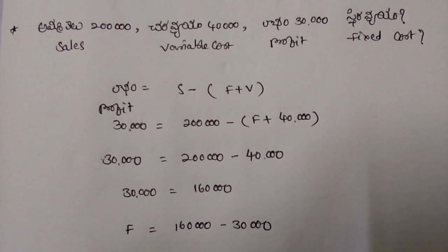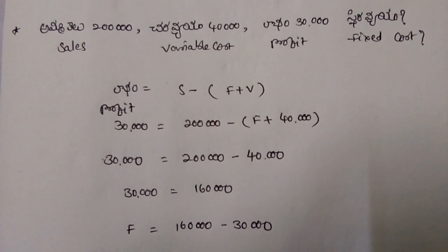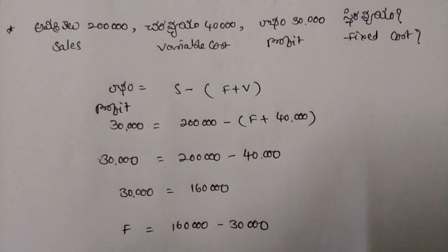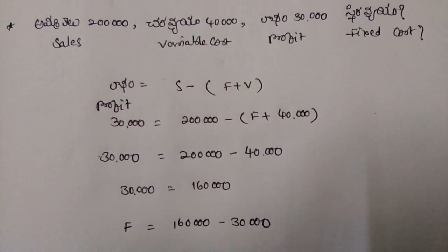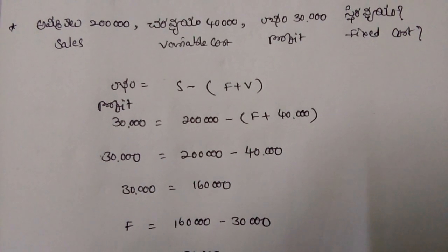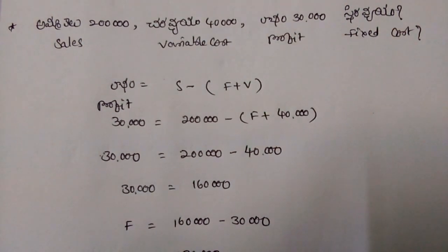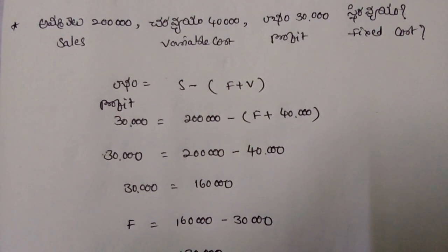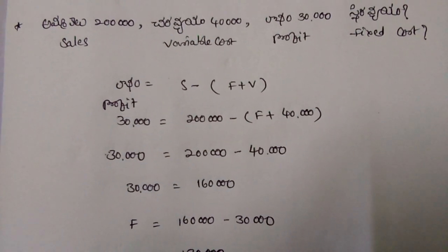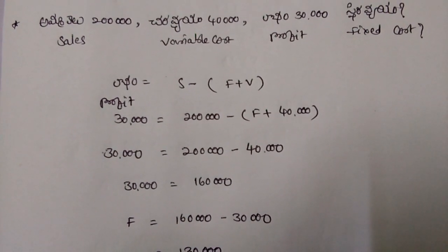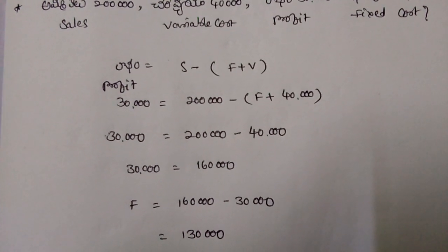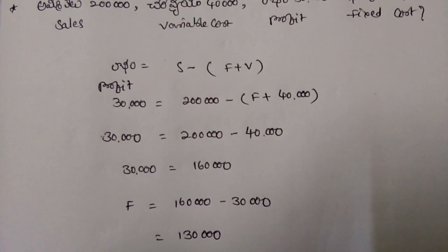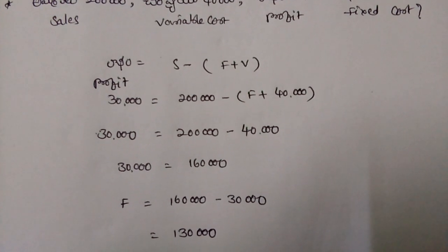Then, 30,000 equals to 2 lakhs minus F plus 40,000. Then, 30,000 equals to 2 lakhs minus 40,000, so 30,000 equals to 1 lakh 60,000. So F equals to 1 lakh 60,000 minus 30,000, that equals to 1 lakh 30,000.